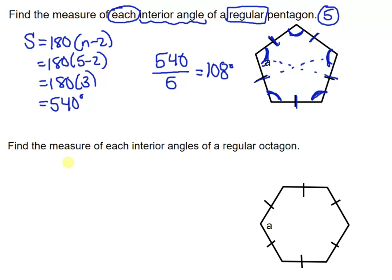Very similar for the second one. So find the measure of each interior angle of a regular octagon. So again, regular octagon.